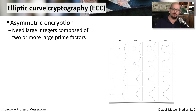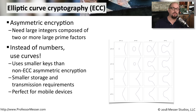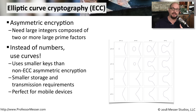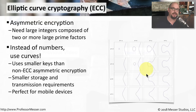This asymmetric encryption process uses very large integers and very large prime numbers, and there is significant overhead associated with it. Mobile devices don't have as much CPU power or memory as desktop or laptop systems, so in that case we may want to use elliptic curve cryptography, or ECC. Instead of using those large prime numbers, ECC uses curves to create asymmetric encryption. This results in smaller key sizes for the same amount of security, and has a smaller storage and transmission requirement than traditional asymmetric encryption.